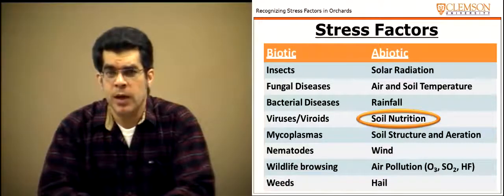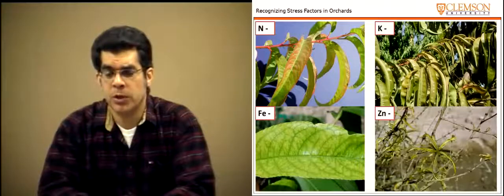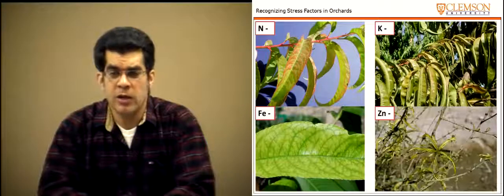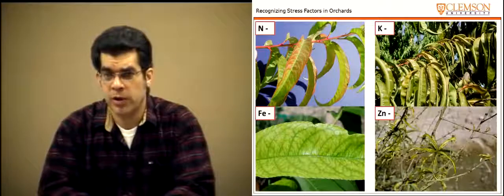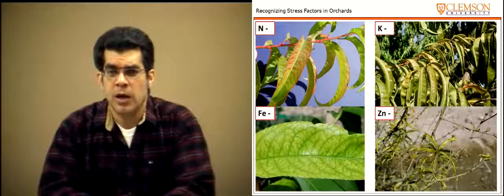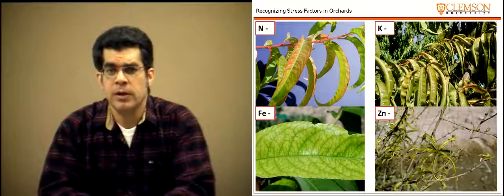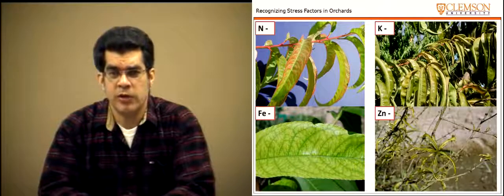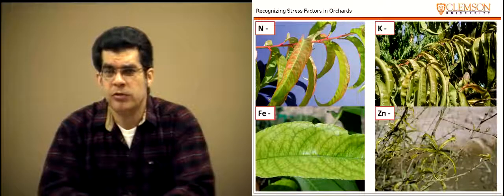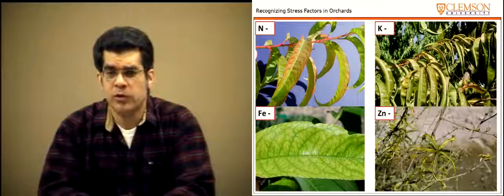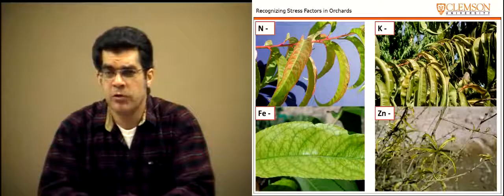Soil nutrition is important — ensure elements necessary for tree growth are supplied through annual fertilization. Soil testing and foliar nutrient testing determine what is available in the soil and present in the tree. Nitrogen deficiency symptoms show a reddening color of leaves; iron deficiency shows typical foliage symptoms; potassium deficiency presents with leaf curling; and zinc deficiency has its own characteristic symptoms. It is also possible to have too much fertilizer causing excessive growth, which is also undesirable. Maintaining the right balance of nutrients at the right time of year is very important.